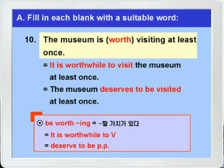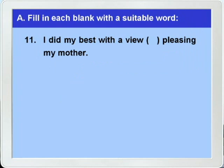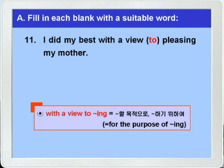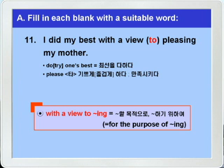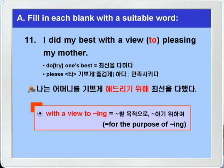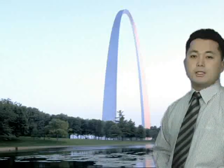다음 마지막 11번입니다. 'I did my best with a view ___ pleasing my mother.' with a view ___ pleasing 이렇게 되어 있는데 빈칸에는 to가 들어가면 돼요. 'with a view to -ing' 하면 '뭐뭐 목적으로, 뭐뭐 하기 위하여' 이런 뜻으로 'for the purpose of -ing'와 같은 말입니다. 'I did my best' — 최선을 다하다라는 뜻이니까 나는 최선을 다했다. 'with a view to pleasing my mother' — please는 타동사로 '기쁘게 하다, 즐겁게 하다, 만족시키다'라는 뜻이니까, 어머니를 기쁘게 해드리기 위해 최선을 다했다 이런 말이 되겠습니다.